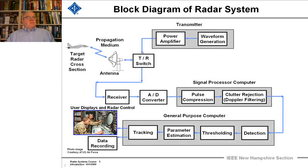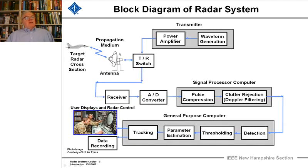Then the energy goes to a switching mechanism — sometimes it's a circulator, sometimes it's a duplexer, sometimes it's an actual transmit-receive switch implemented in other ways. Its job is to isolate the powerful transmit signal from the receiver, which is going to want to listen to the very weak echoes coming back from the target. When transmitting, the signal will go out to the antenna and be given directionality, transferring the energy out through the atmosphere, or space if this was a radar on a spacecraft.